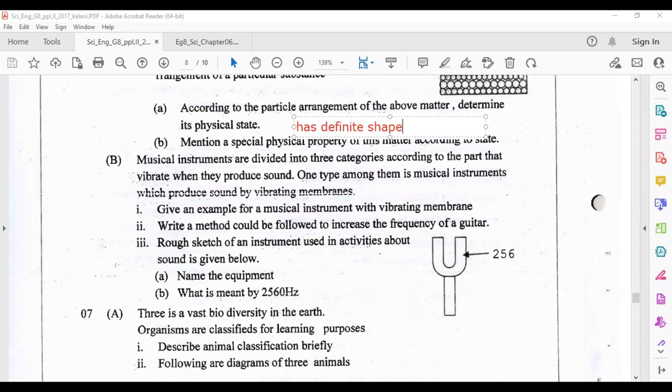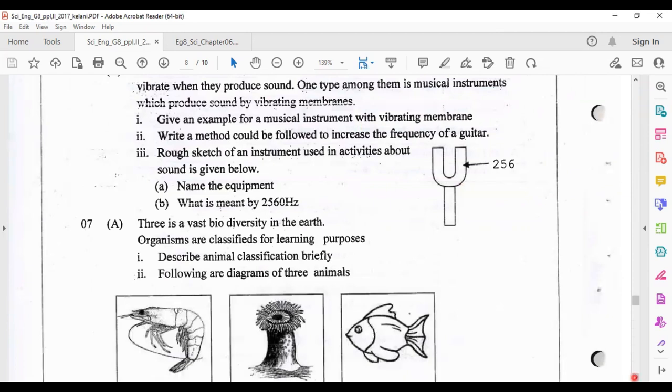B part: musical instruments are divided into three categories according to the part that vibrates when they produce sound. One type among them is musical instruments which produce sound by vibrating membranes. Give an example for a musical instrument with vibrating membrane. You can write the answer: drum, rabana, or daula.